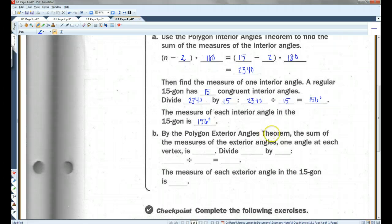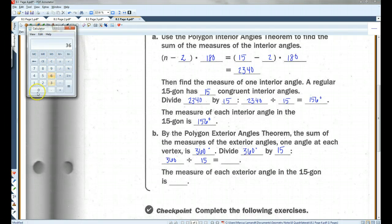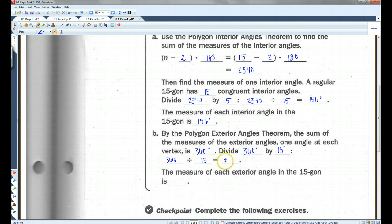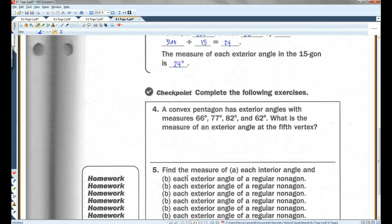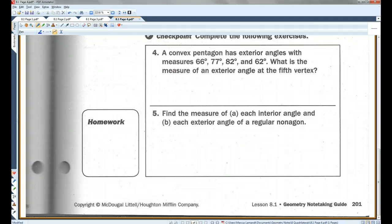All right, by the polygon exterior angles theorem, the sum of the measures of the exterior angles, one angle at each vertex, is 360. We don't have to plug it into any equation. It's automatically 360 degrees. So we're going to divide 360 by 15. 360 divided by 15. Let's see here. 24. So the measure of each exterior angle in the 15-gon is 24 degrees. All right, I'll let you guys do the checkpoint, and that's all.